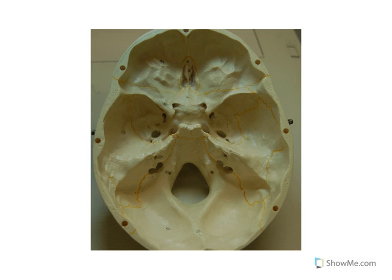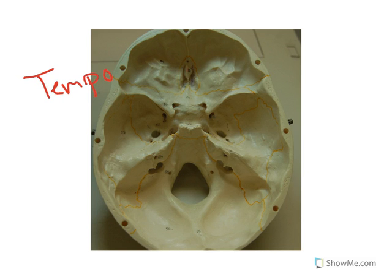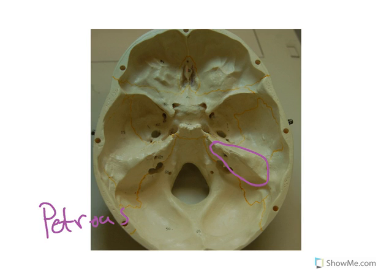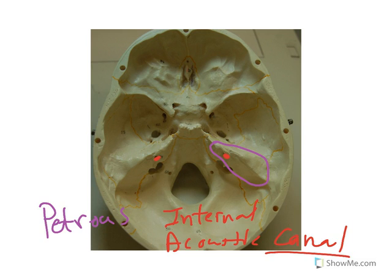The rest of the structures will be seen inferiorly. We're going to turn our attention now to the temporal bone — all of this in red encloses the temporal bone. Within the temporal bone, I'm going to outline in purple the petrous portion. And here we have the internal acoustic canal.